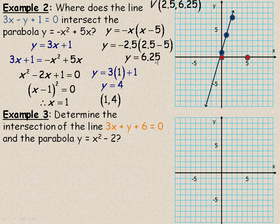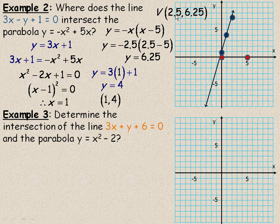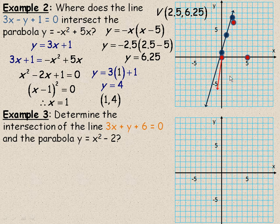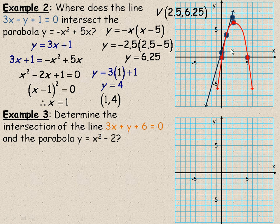And so here's our vertex. It's at (2.5, 6.25). And so we'll plot that point. There's our vertex. And so we draw a parabola through that. That's the vertex that opens down through these two intercepts.